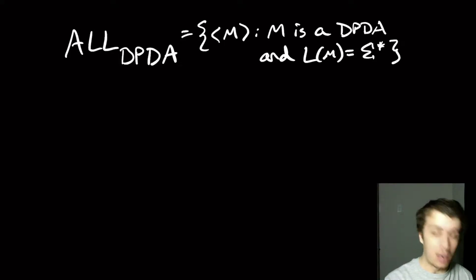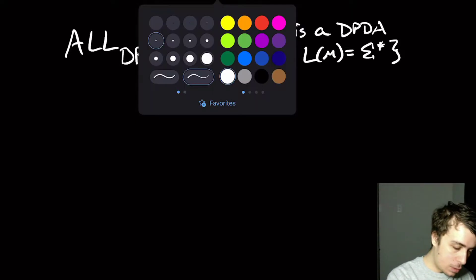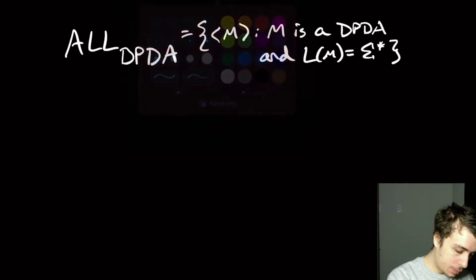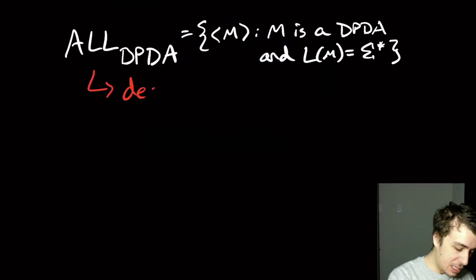Hi, I want to talk about a problem that I actually assigned on a final exam one time, which is this problem: ALL_DPDA, which may seem like a mouthful, but it's all DPDAs such that they accept everything. And I want to convince you that this is, in fact, decidable.